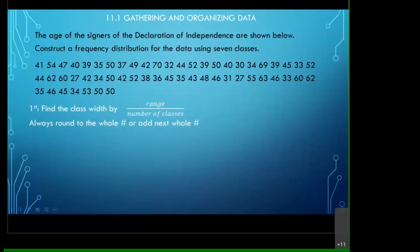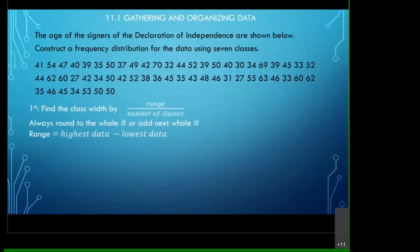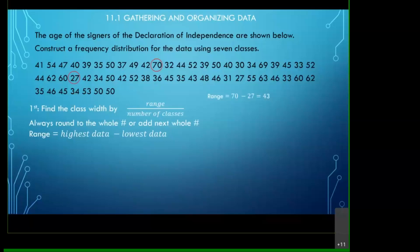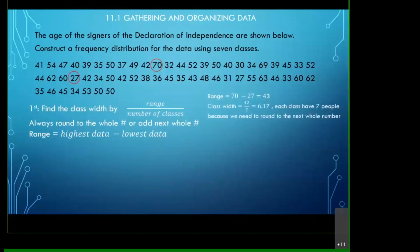To find the class width, we take the range divided by the number of classes. The number of classes is seven. The range is the highest data value minus the lowest data value. Scanning through the data, the highest age is 70 — the oldest signer of the Declaration of Independence — and the youngest is 27. So the range is 70 minus 27, which gives us 43.